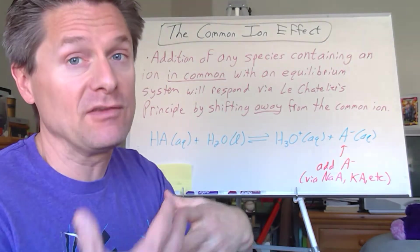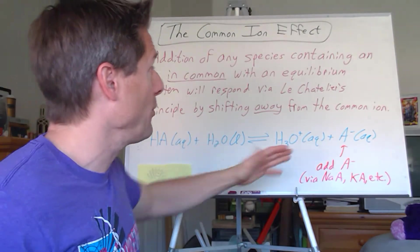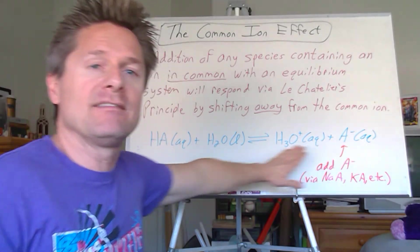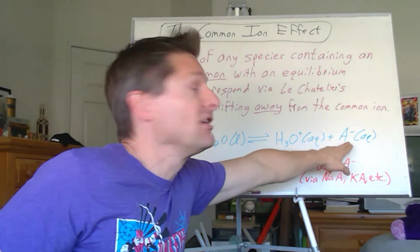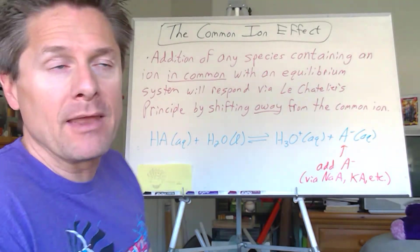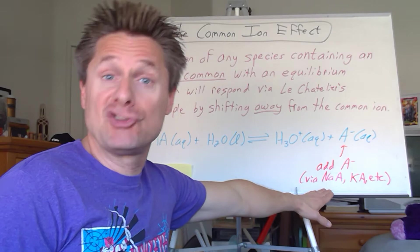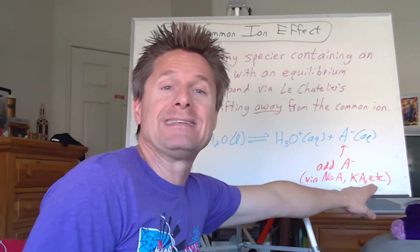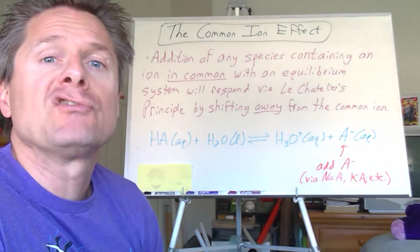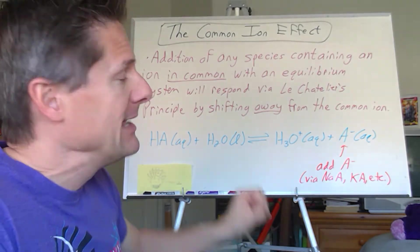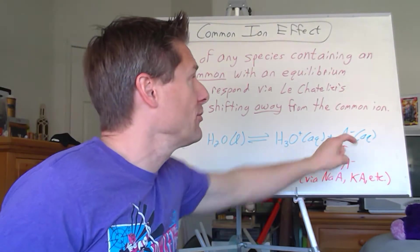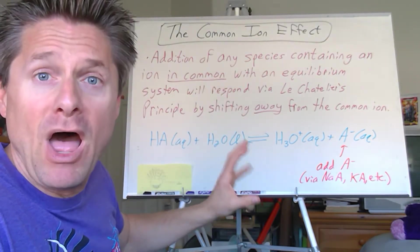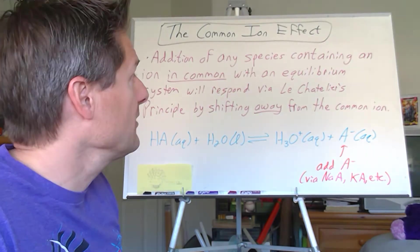So for example, if we've got this equilibrium system with some generic weak acid, HA, so it's ionizing and forms this equilibrium system. Notice the conjugate base, A minus, whatever that is. If I add something to it that contains that A minus, so like the sodium salt of A minus, the potassium salt, the ammonium salt, whatever it is, some salt ionic species that's 100% soluble, you add it to there, and so we're increasing this. This is going to respond. This is the key to the common ion effect. The system will respond via Le Chatelier's Principle because you've disrupted the system by shifting.